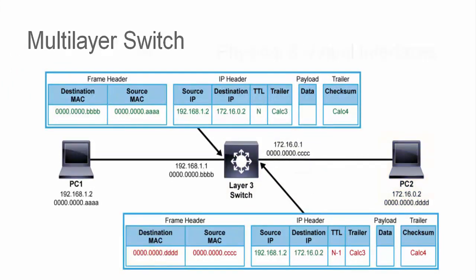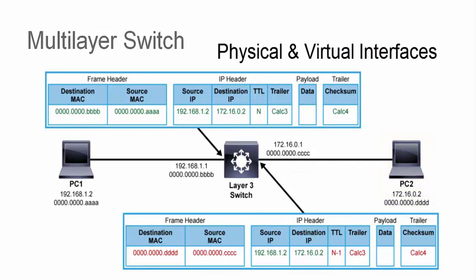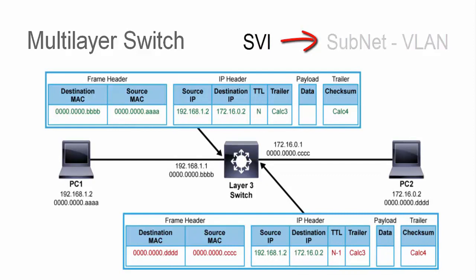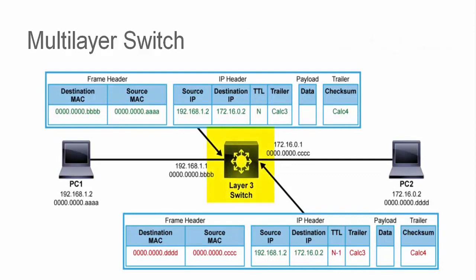Cisco Catalyst switches can support both physical and virtual interfaces. On a layer 3 switch, a switched virtual interface, or SVI, can be utilized to map an IP subnet to a VLAN. The SVI can also serve as the default gateway to provide the mechanism to route traffic from one VLAN to another. The ability to route between VLANs on one device illustrates the benefit of using a multi-layer switch, as both layer 2 and layer 3 are cached in hardware and forward frames and packets using hardware ASICs.